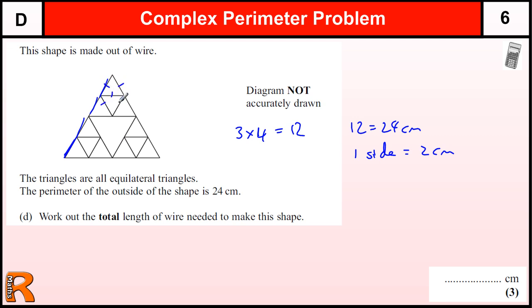So all we need to do is count up the sides now. We've got one, two, three, four, five, six, seven, eight, nine, ten, eleven, twelve, thirteen, fourteen, fifteen, sixteen, seventeen, eighteen, nineteen, twenty, twenty-one, twenty-two, twenty-three, twenty-four, twenty-five, twenty-six, twenty-seven sides. So we've got 27 times by 2, which is 54 centimeters.